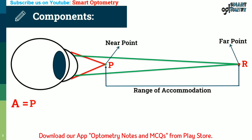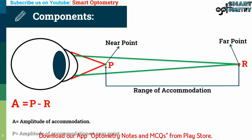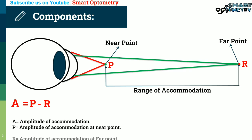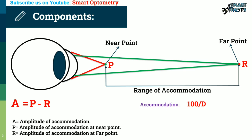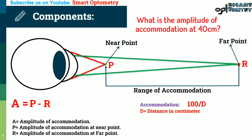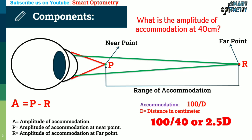The formula for amplitude of accommodation is A = P − R, where A is the amplitude of accommodation, P is the accommodation at near point, and R is the accommodation at far point. For a specific distance, amplitude of accommodation can be identified using the formula 100 divided by D, where D is the distance in centimeters. For example, at 40 centimeters, the amplitude of accommodation is 100 ÷ 40 = 2.5 diopters.